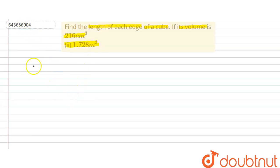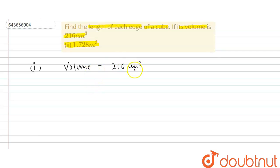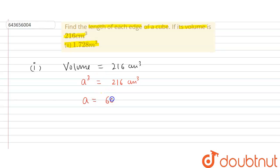First we solve part one, where the volume is given as 216 centimeter cube. Let the side of the cube be a. So a cube equals 216 centimeter cube. The cube root of 216 is 6, so a is equal to 6 centimeters.